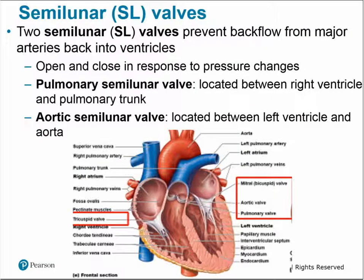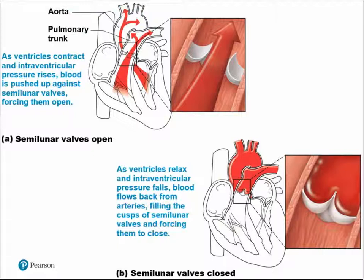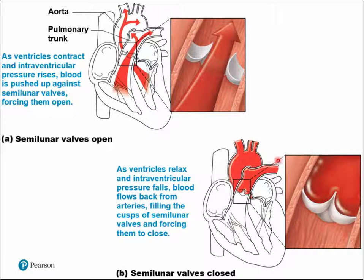The semilunar valves prevent backflow from the major arteries back into the ventricles, also opening and closing in response to pressure changes. The pulmonary semilunar valve is between the right ventricle and pulmonary trunk; the aortic semilunar valve is between the left ventricle and aorta. As the ventricles contract, increased pressure pushes blood up and opens the valves. When the ventricles relax, blood pressure falls and blood slides back down the artery, but the cusps of the semilunar valves close to prevent it from leaking back into the ventricle.